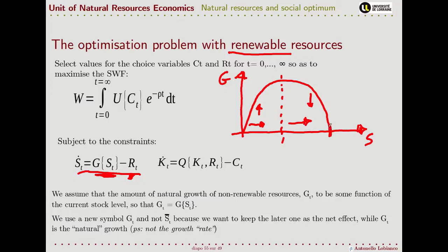This can be due to many factors, typically actual limiting factors like the availability of food or of space. Something important to consider is that when we don't have harvesting, the growth is equal to the variation of the stock in time. Hence, this is a phase diagram, and we should pay attention to not confound the growth with the growth rate.